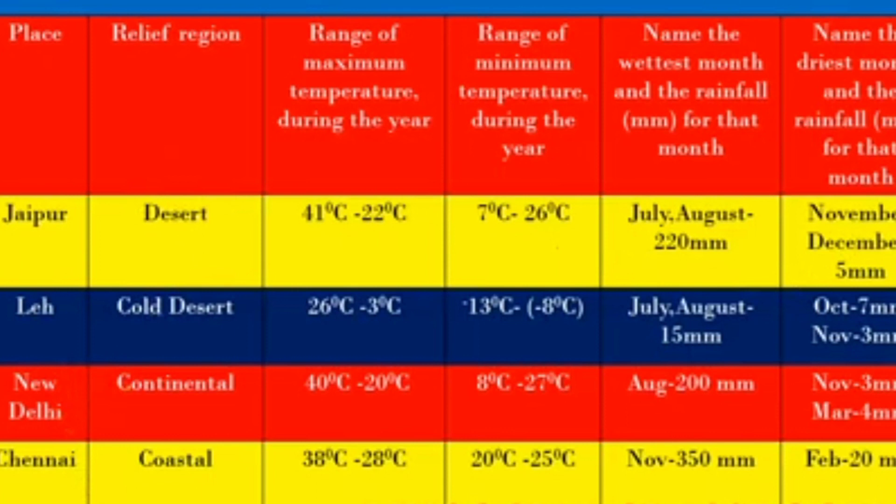For Chennai: the relief region is coastal. The range of maximum temperature is 38 degrees Celsius to 28 degrees Celsius. The range of minimum temperature is 20 degrees Celsius to 25 degrees Celsius. The wettest month is November with 350 mm of rainfall. The driest month is February with 20 mm of rainfall.